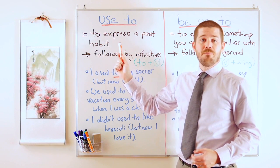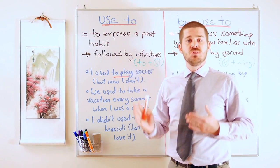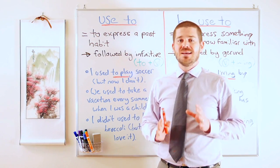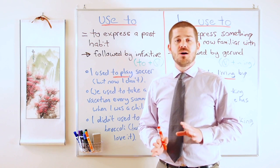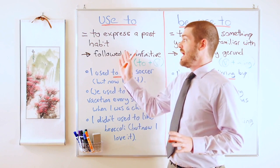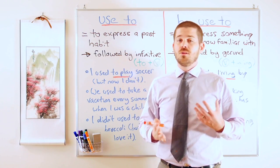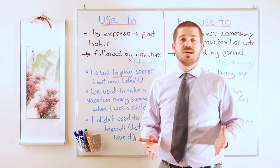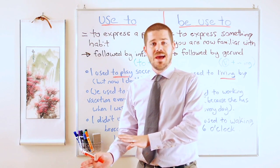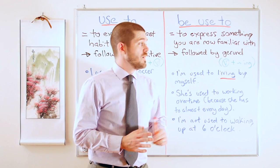If we look at 'used to,' the definition is: to express a past habit. When we use 'used to' it's always in the past tense — we only talk about events that happened in the past. Also, this does not show how long I did something; it only shows that I did something in the past but I don't do that thing now.